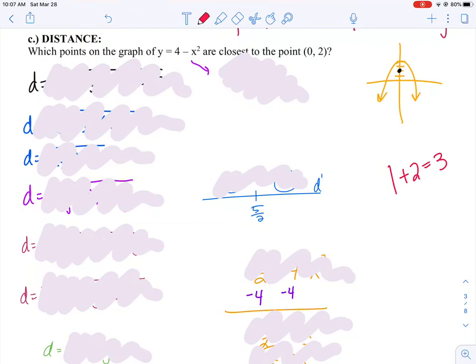The first thing I did is I tried to graph a picture so that I can visualize what's going on. I knew this equation was going to be a parabola that was going to open down and be shifted up 4. I also knew there was a point that I wanted to see was closest to this graph, the point (0, 2).